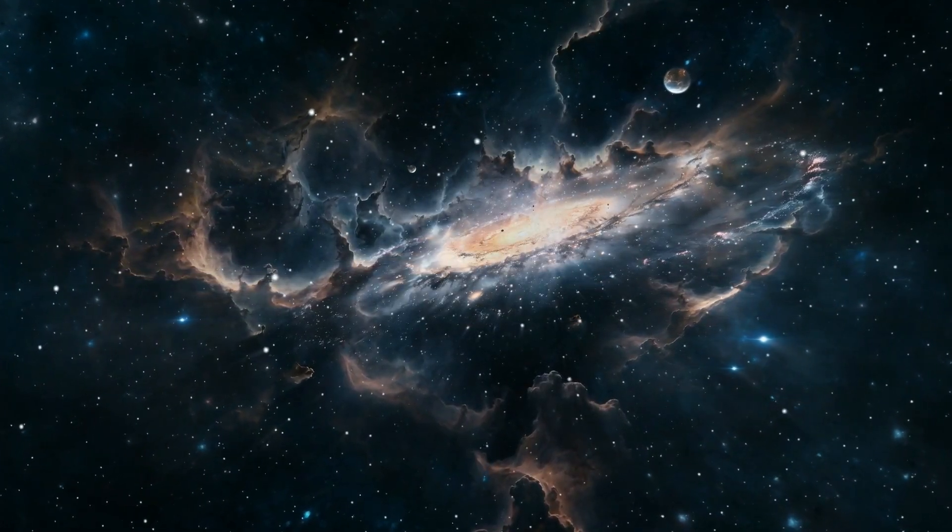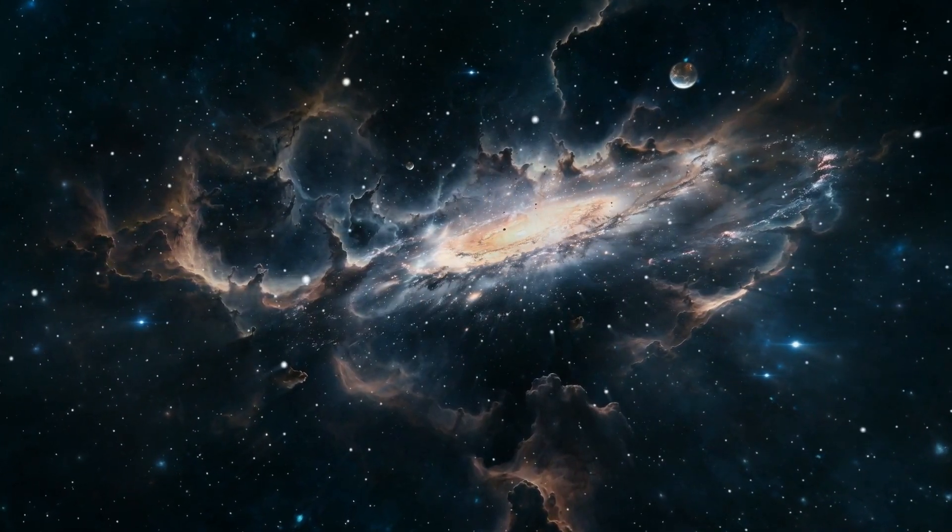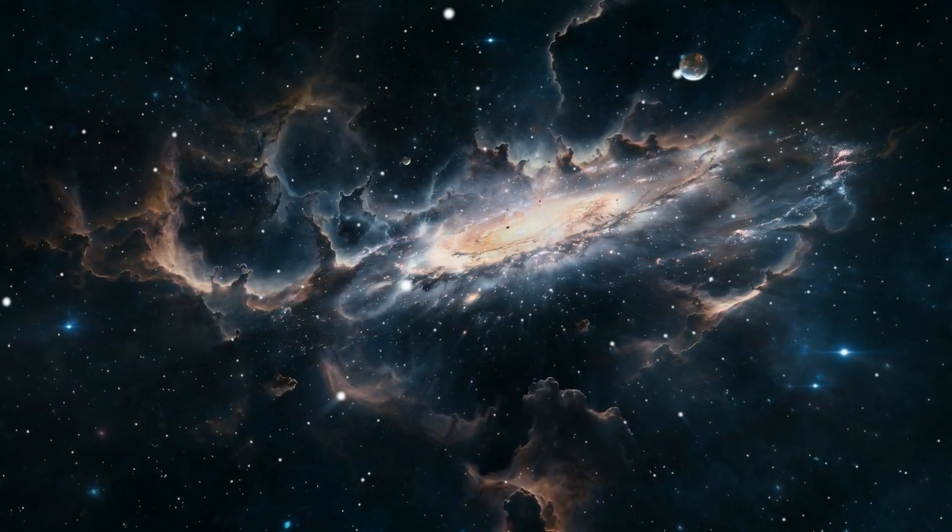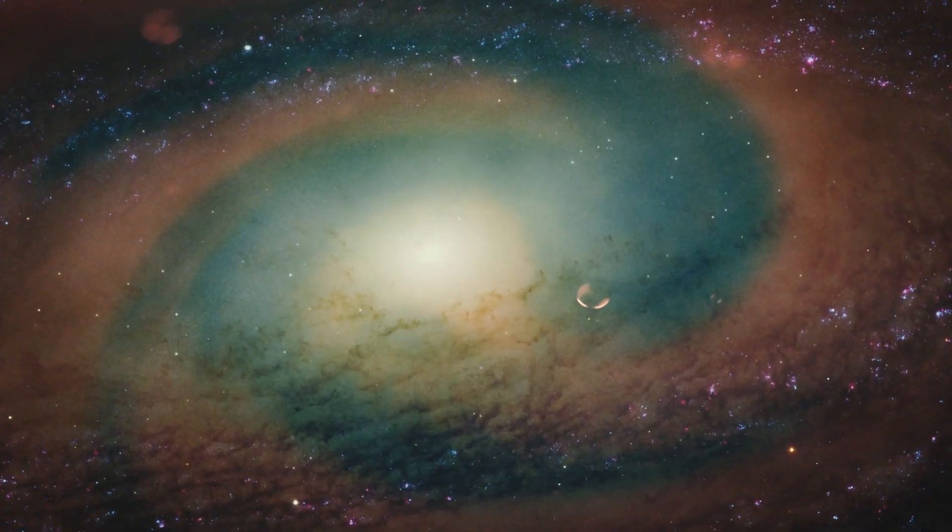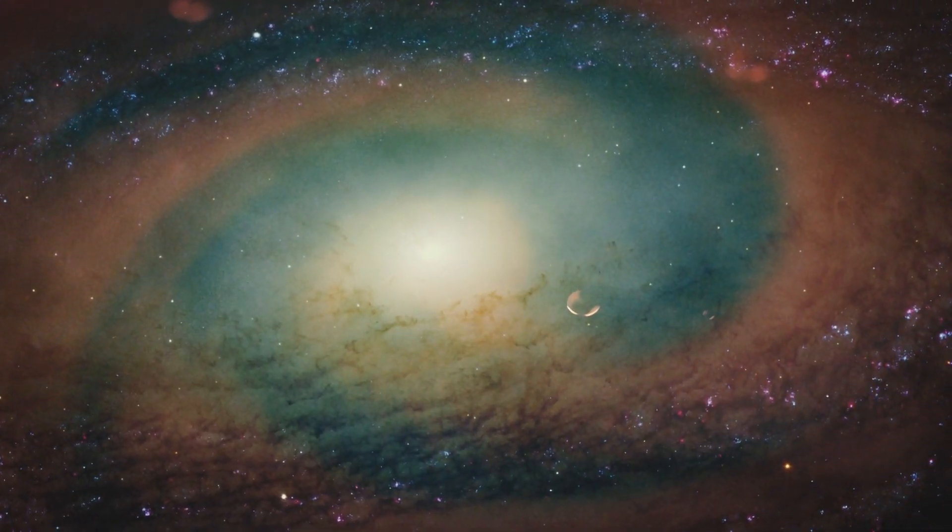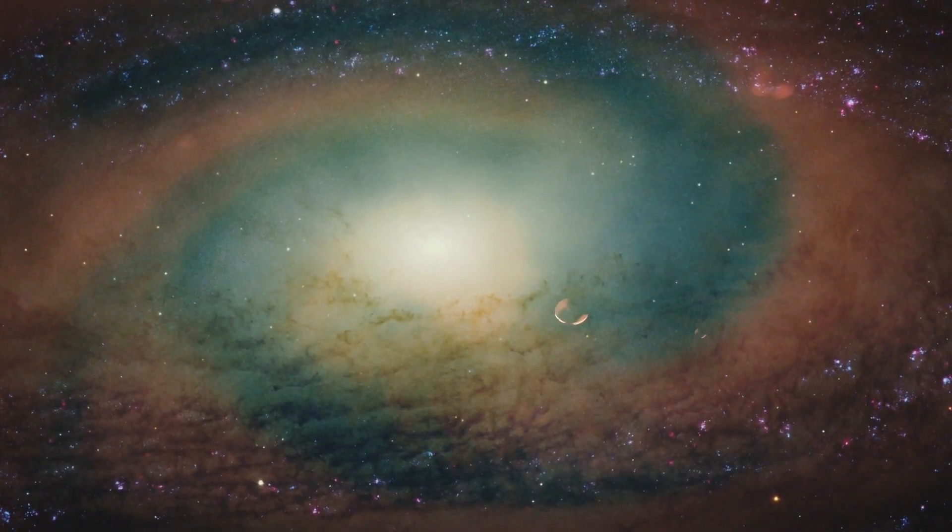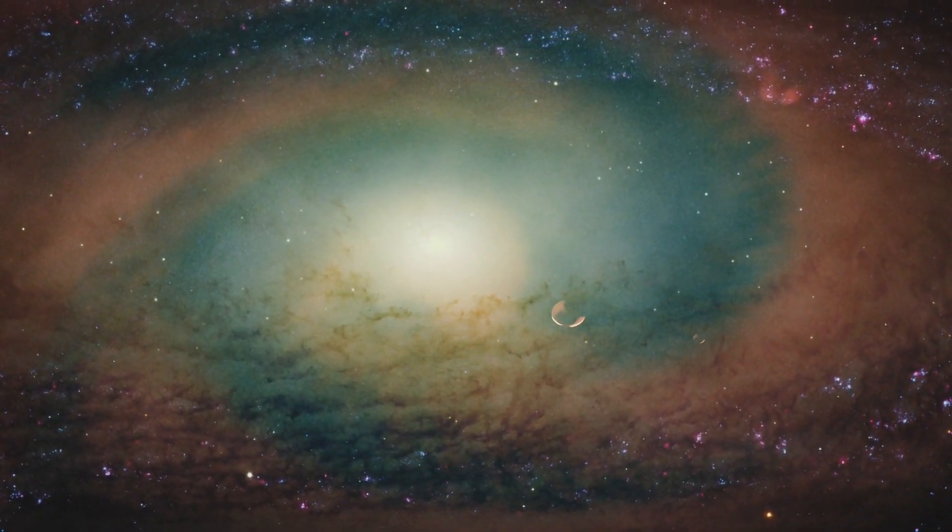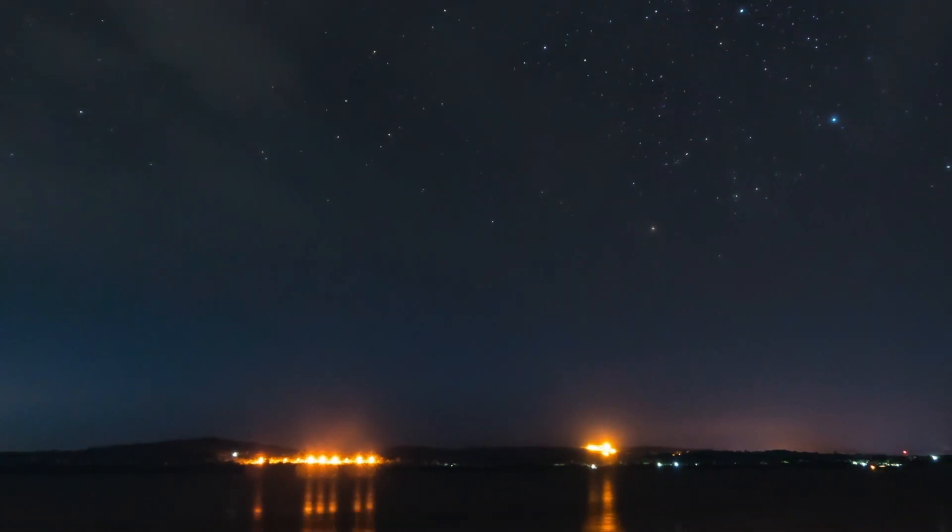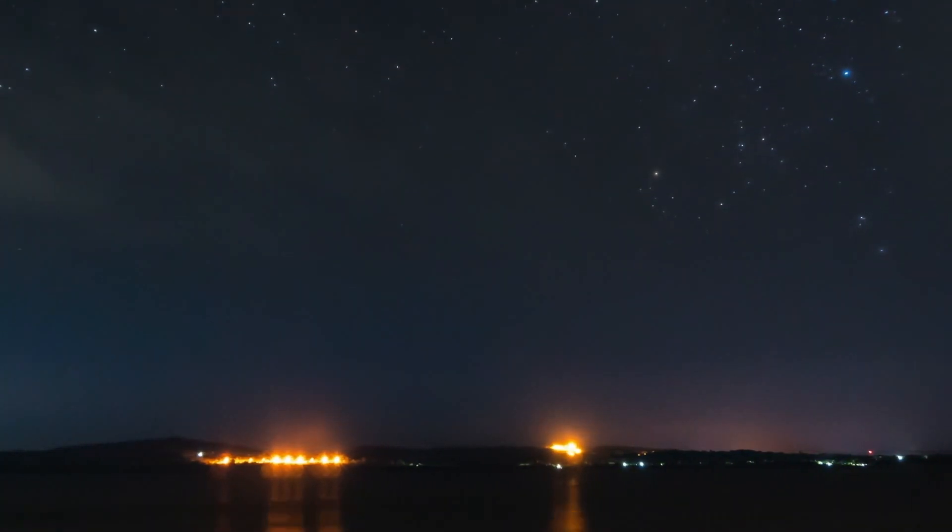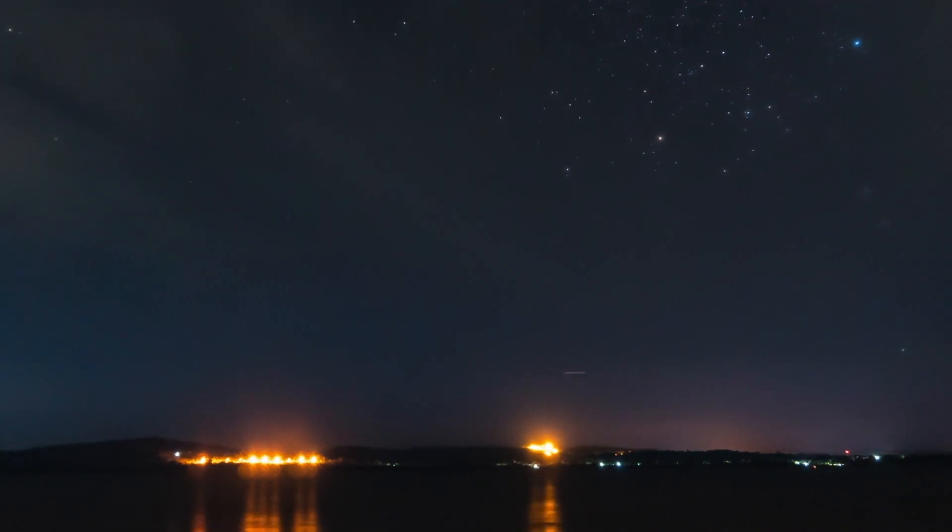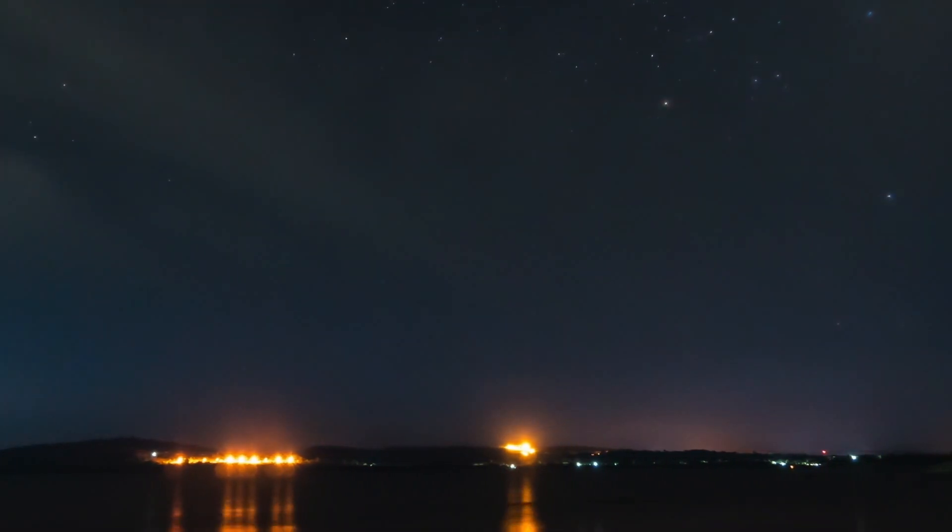Exoplanets are typically discovered through the effects they have on their host stars. The gravitational influence of an exoplanet can cause its host star to wobble, and this radial velocity can be detected by astronomers. The Kepler Space Telescope utilized the transit method, which measures the dimming of a star's light when an exoplanet passes in front of it. This method has provided significant data about exoplanets, including their size, distance, and temperature.